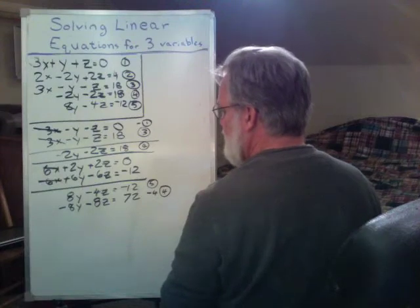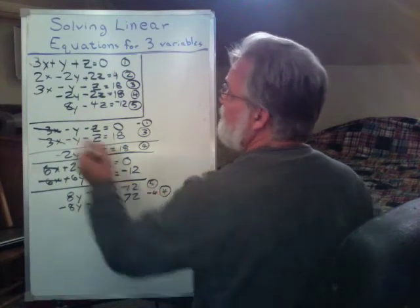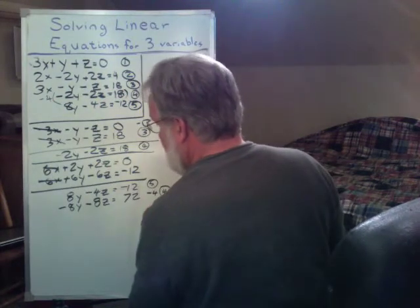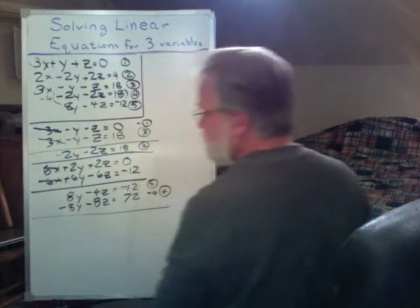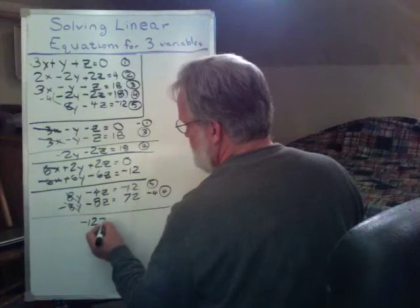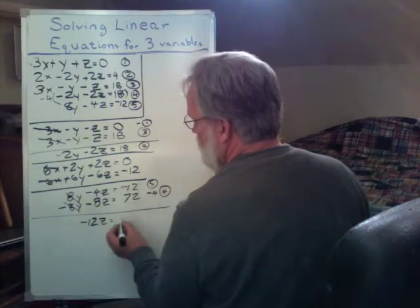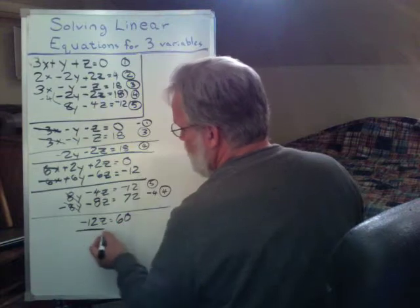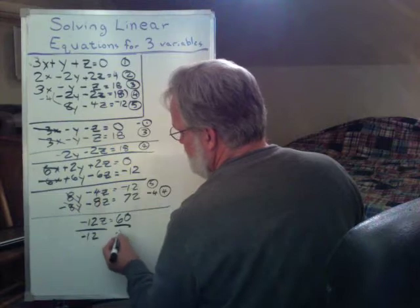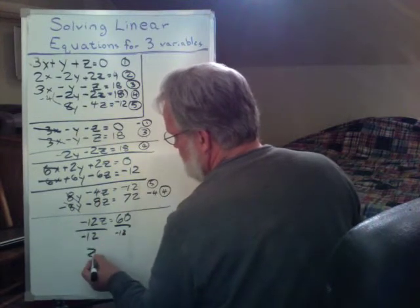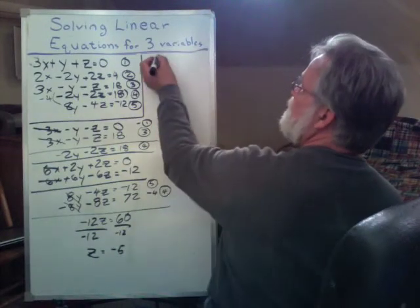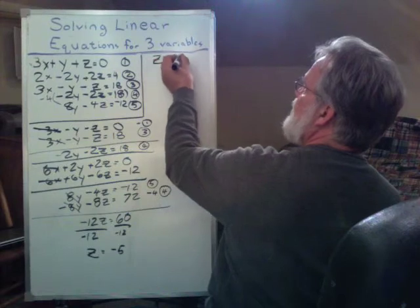Okay? You see that? That's what I did. I simply took this times a negative 4. Okay? All right. Now I'm going to add these two together. The y's eliminate. I'm going to be left with negative 12z. And 72 take away 12 is 60. Divide both sides by negative 12. So I get my z all alone. And I get z equals minus 5. So z equals minus 5.